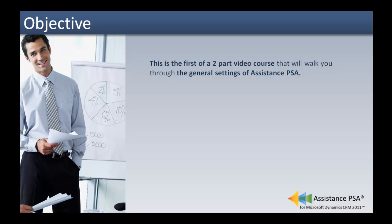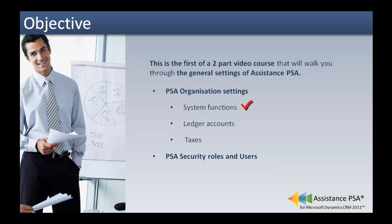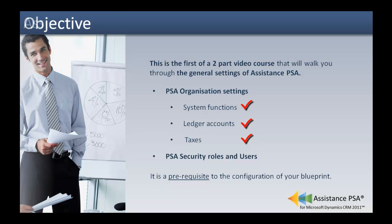This is the first of a two-part video course that will walk you through the general settings of Assistance PSA. This tutorial will focus on the specific settings of your organization. After its completion, you will be able to set up the different functionalities of PSA according to your business processes, as well as to create your ledger accounts and define your sales tax tables. Note that this course is a prerequisite to the configuration of your blueprint, and you will need to have full administration rights in order to complete it.